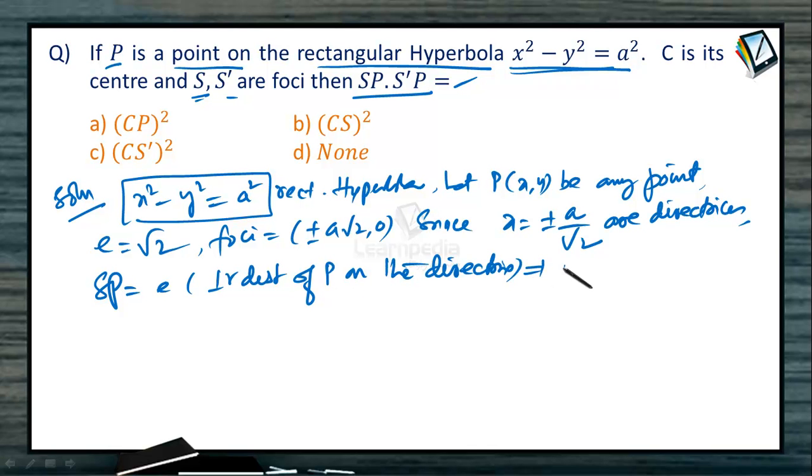So therefore, SP becomes √2 times |x + a/√2| and S'P is equal to e into the perpendicular distance of P on the other directrix. So S'P is equal to √2 times |x - a/√2|.